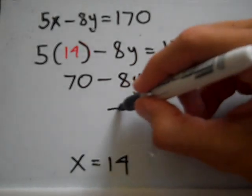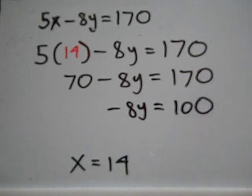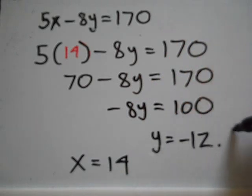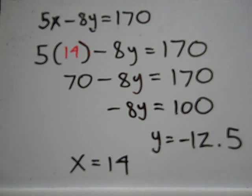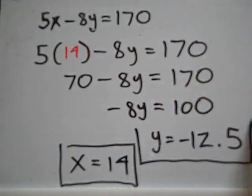Subtracting 70 from both sides, I have negative 8y is equal to 100, from which I can determine that y is equal to negative 12 and a half. So that's the answer to the original system of two equations and two unknowns. x is 14 and y is negative 12 and a half.